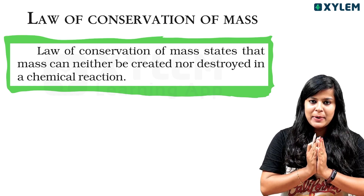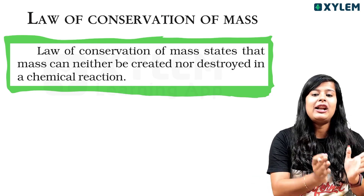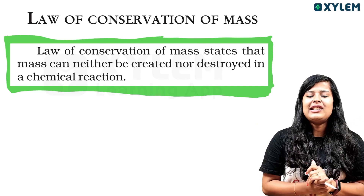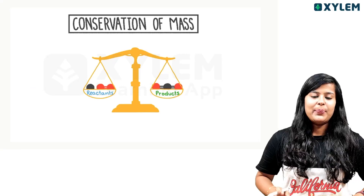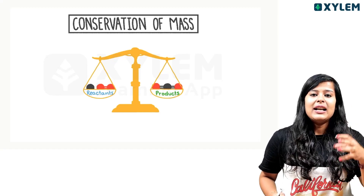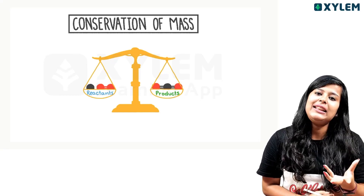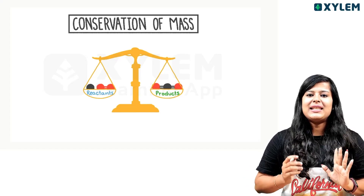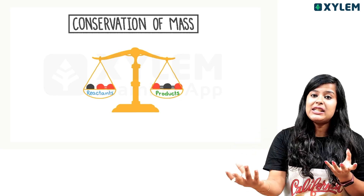When we're doing a chemical reaction, we cannot create mass or destroy mass. To understand this, think of a cake: ingredients like cocoa powder, maida, and sugar are the reactants, and the product is the cake. Similarly, in chemical reactions, reactants produce a product.